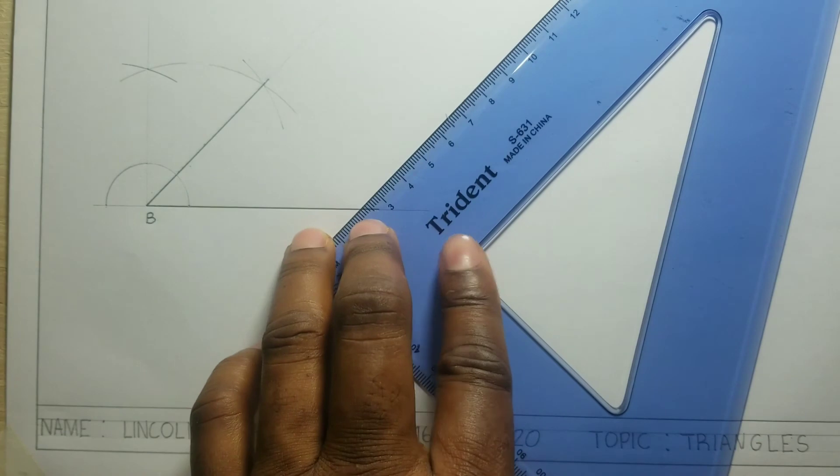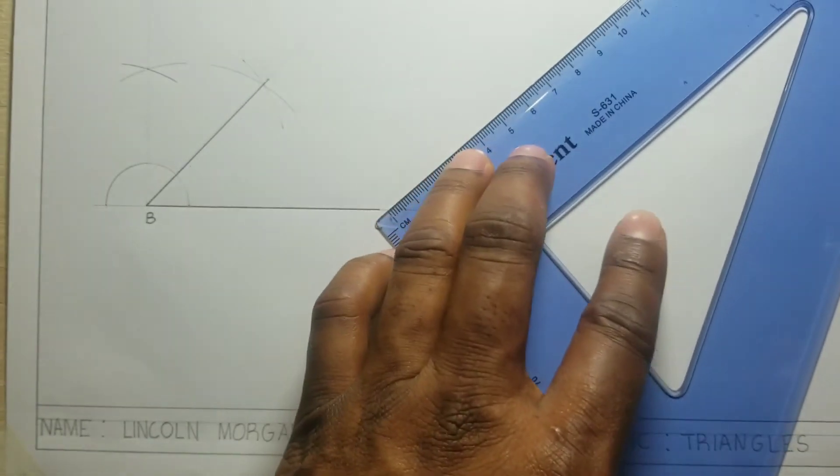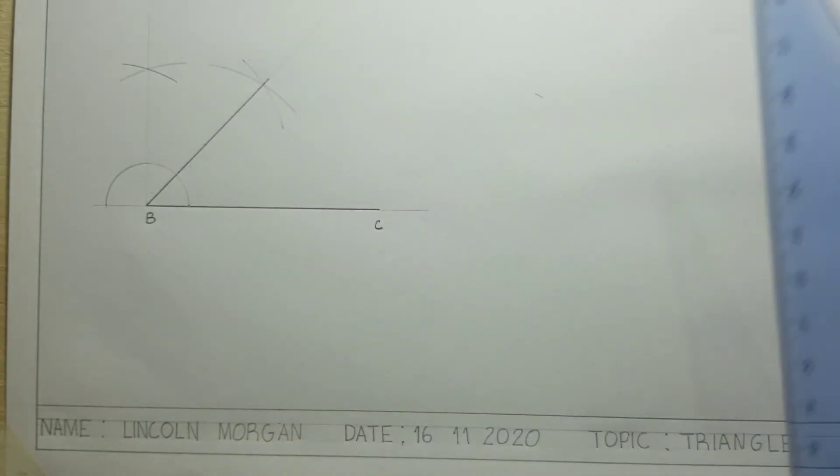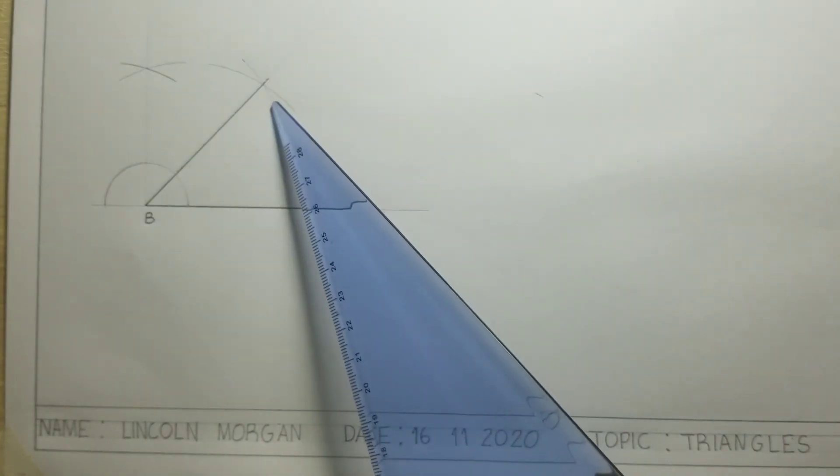Now I just outlined my 60 millimeters to give me point A. I will now draw a line from point A to C.